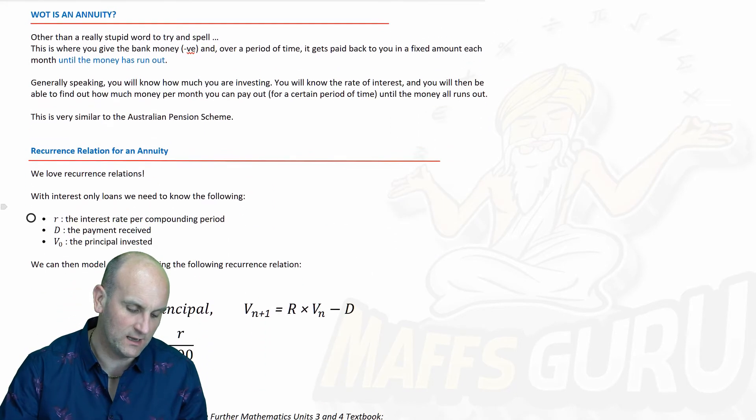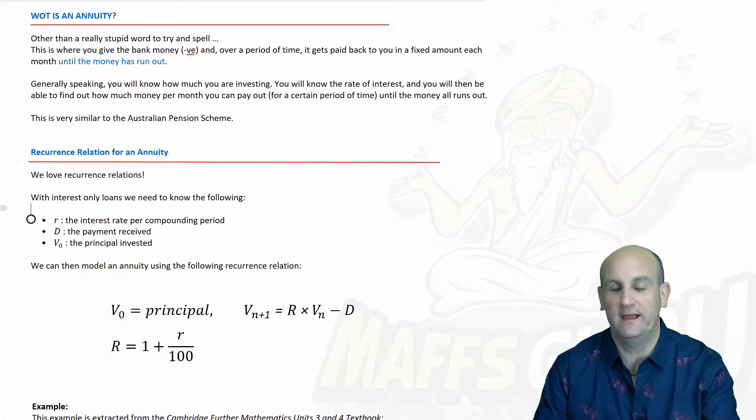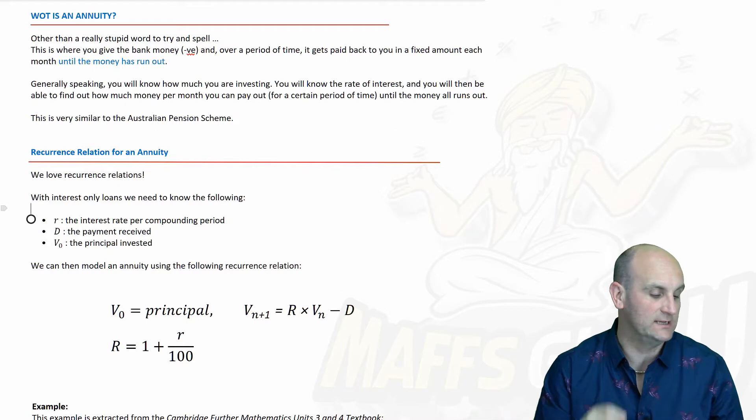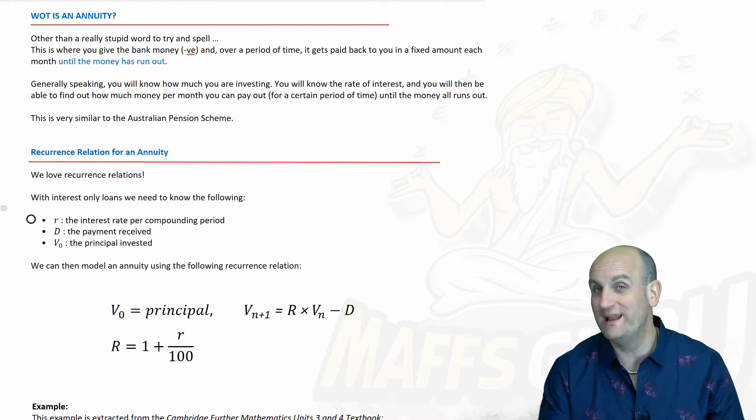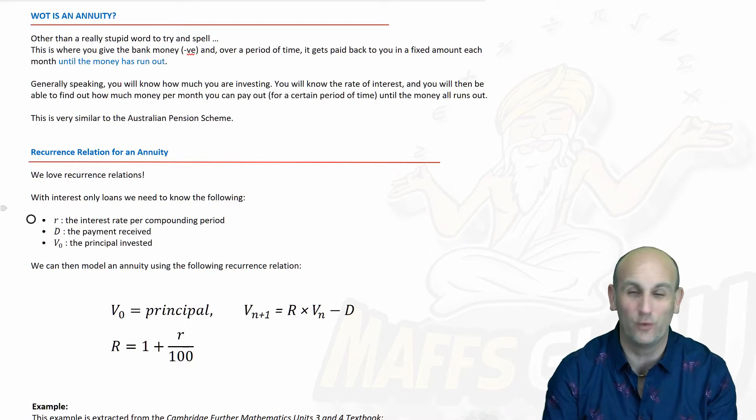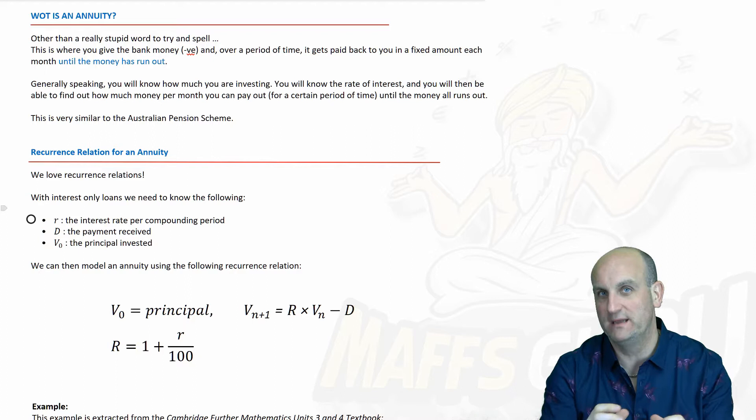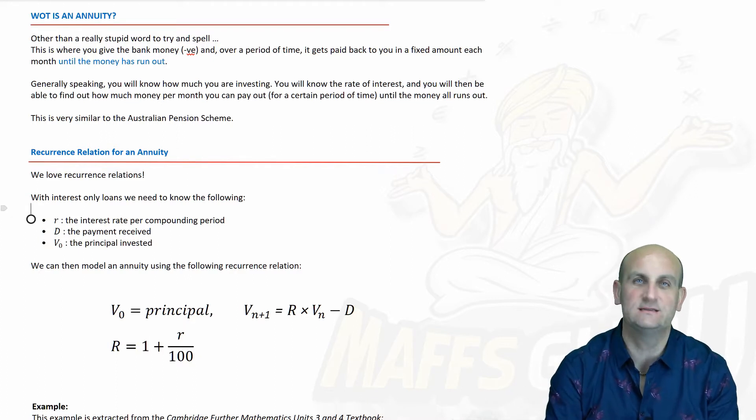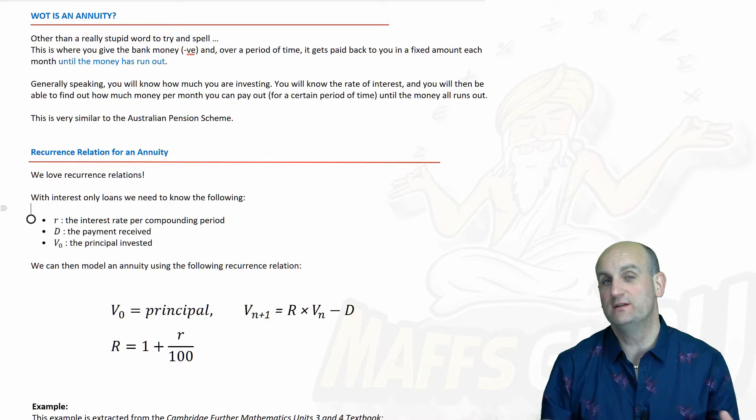So, annuities are basically like huge piggy banks. And a brilliant example is actually over here, the Australian pension system. Now, if you're watching this, you probably haven't even thought about getting a pension. What is a pension? It's like a massive piggy bank. Every year, every month, you pay into this piggy bank, and it effectively helps you for your retirement.